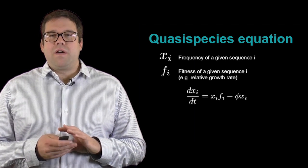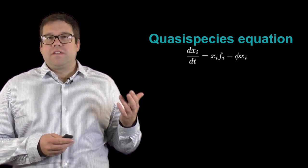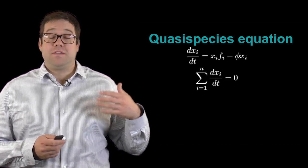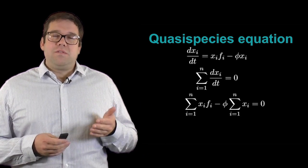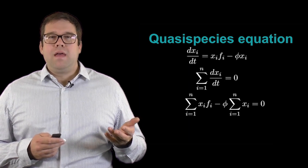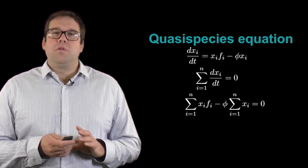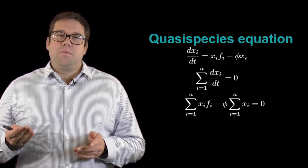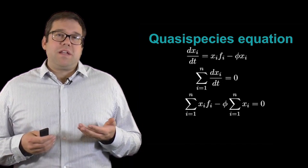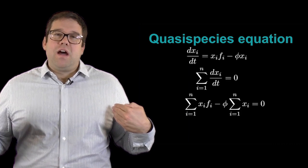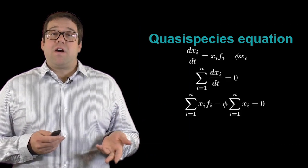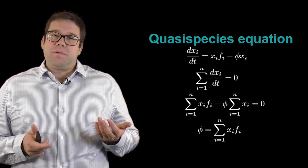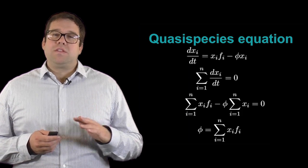So what should phi be? We need to find some way to define phi. What we can do is say that this dx_i/dt, which equals some growth term minus a death term, should also have the property that the total population is not changing in size. Said another way, the sum of all of the individual sequence growth rates should be zero. If we use the top equation to expand out the sum below, what we have is that the sum of x_i f_i minus phi times the sum of x_i equals zero. This right-hand term, phi times the sum of x_i, well the sum of x_i by definition is just one because we're just adding up all the frequencies, that should sum to one. So that right-hand term is just phi. What this implies is that phi simply equals the sum of x_i times f_i. Said another way, this is the average fitness of the entire population because we're weighting the fitness of each sequence by its overall abundance.